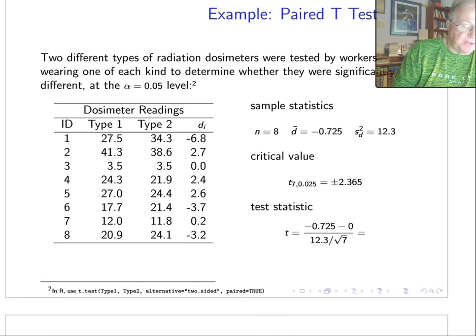We'd like to compare two different types of radiation dosimeters. And so we have workers—eight workers wear both dosimeters for a period and see how the readings work—and then we tabulate them worker by worker and calculate the differences. Now notice some differences are positive and some differences are negative. Nothing wrong with that.